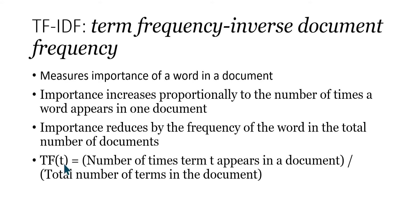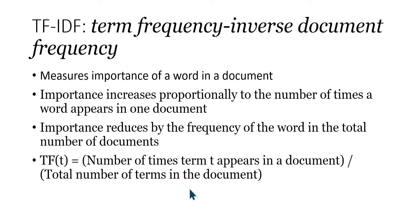The term frequency is the number of times term T appears in the document divided by the total number of terms in the document. For example, if you have a 300-word document and a certain word appears three times, with a total of 100 terms, then you divide three by 100. We will see this in a practical example.